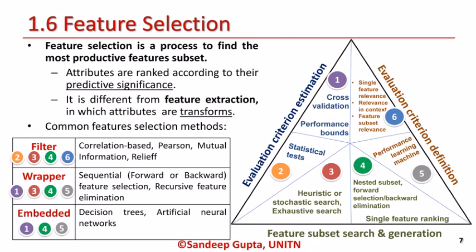Filter methods discover productive features based on their merit scores that can be obtained in statistical tests such as Pearson's correlation, linear discriminant analysis, and analysis of variance, for their correlation with the outcome variable. Filter methods are generally used as a preprocessing step. They are comparatively faster and classifier-independent. The commonly used filter methods are relief-based selection, correlation-based methods, Pearson correlation, and mutual information filters.